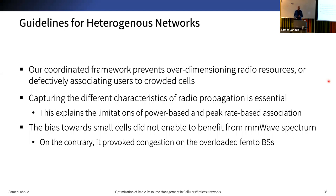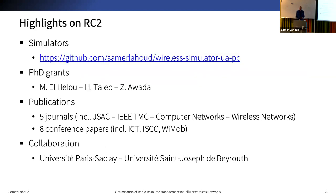Capturing the different characteristics of radio propagation in terms of transmit power and bandwidth is very important in selecting resources in heterogeneous networks. This explains the shortcomings of power-based and peak rate-based user association, as they lack consideration of all radio propagation characteristics. Additionally, the small cell first approach, which introduces bias towards small cells, did not enable benefiting from millimeter wave spectrum and provoked congestion on overloaded femto BSs. Our work on heterogeneous networks started in 2011, exploring RAT selection in HetNet, cloud RAN, and network slicing, with published code for the coordinated framework.